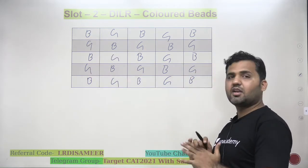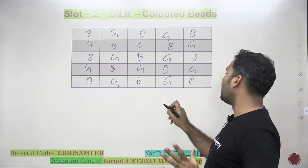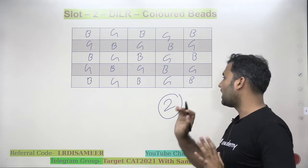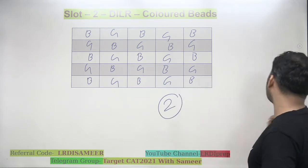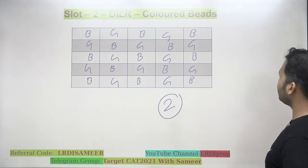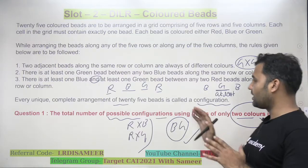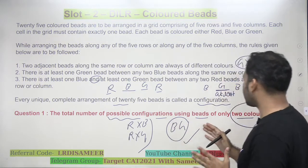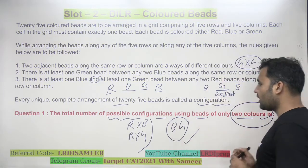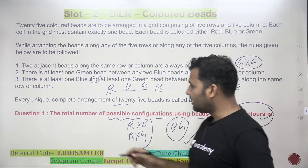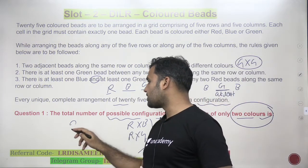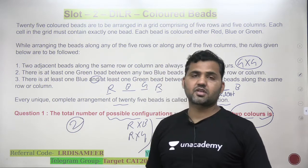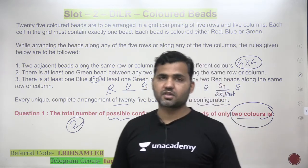So is there any other possibility? No. Only two configurations are possible, and that is the answer. The total number of possible configurations using beads of only 2 colors is 2. That's the answer — a very easy question.